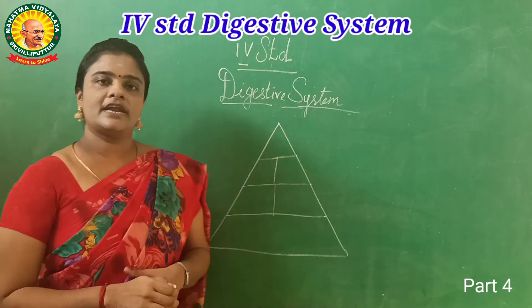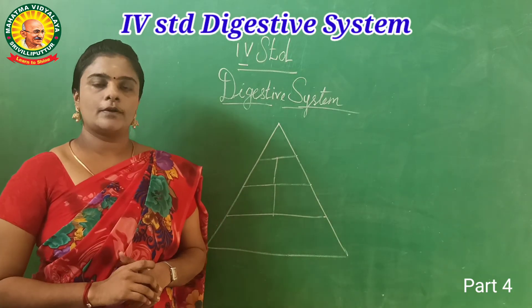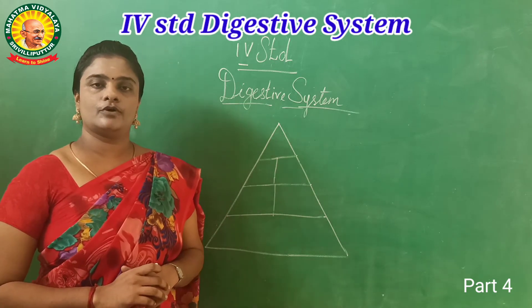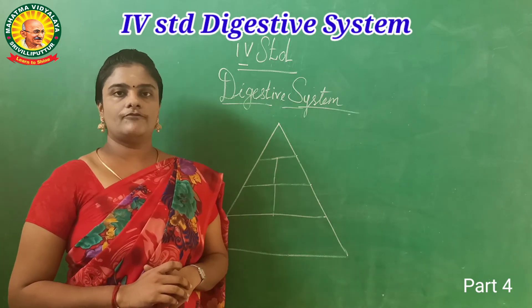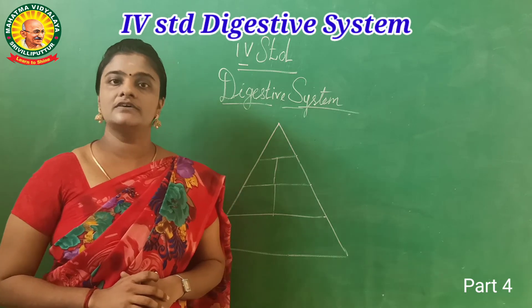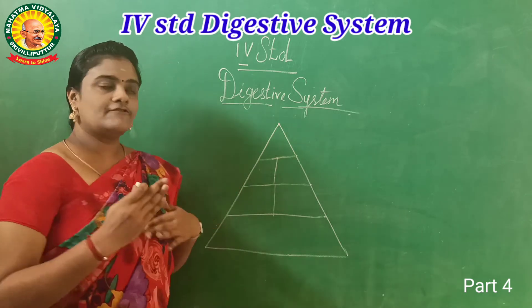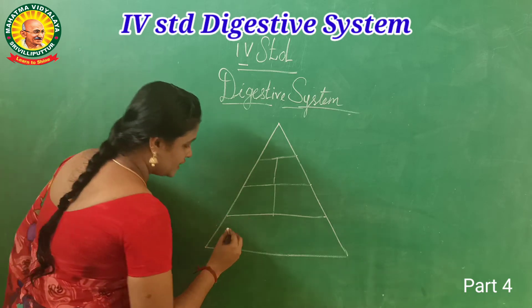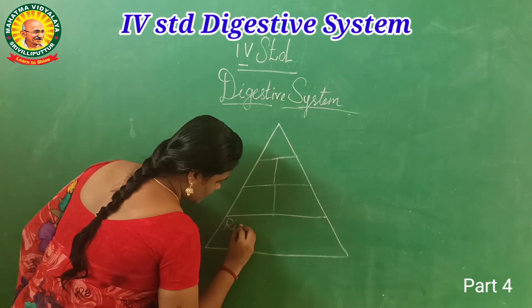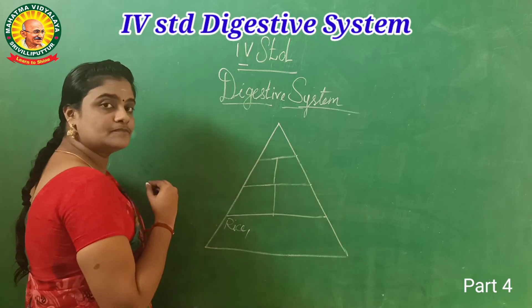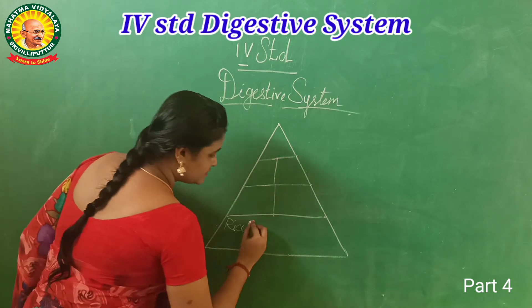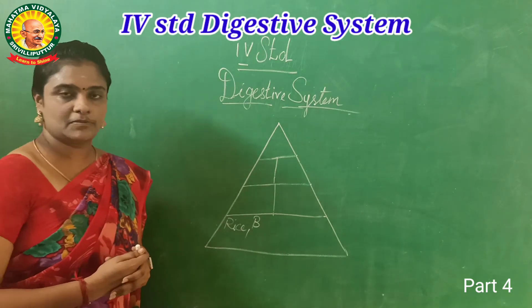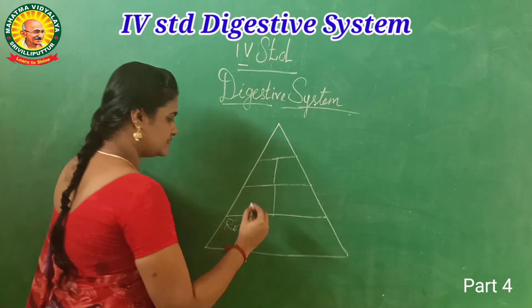First of all, carbohydrates and fats. What are the foods that come under carbohydrates? We all know. Rice — very good. You can say bread as well. Some of you regularly eat bread.